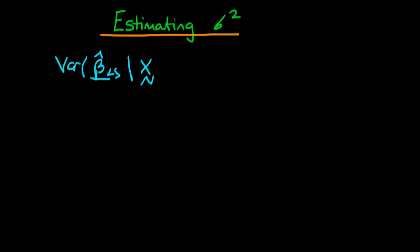given that we know the independent variable matrix X, we found that that was equal to sigma squared times X prime X all to the power minus 1. So this is the exact variance of least squares estimators.